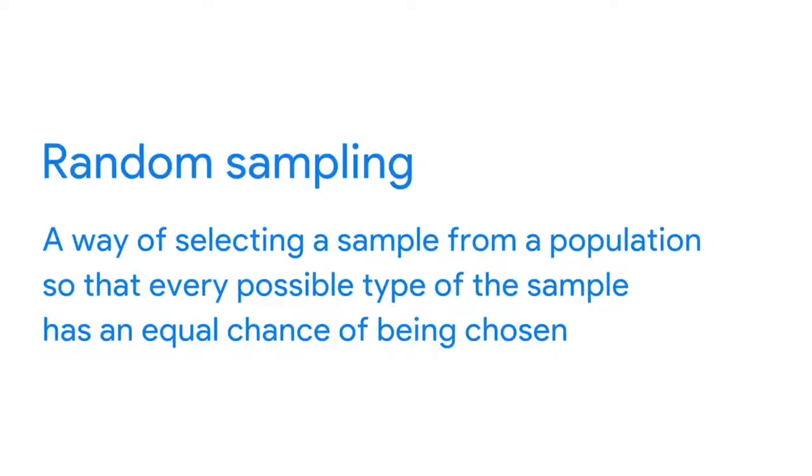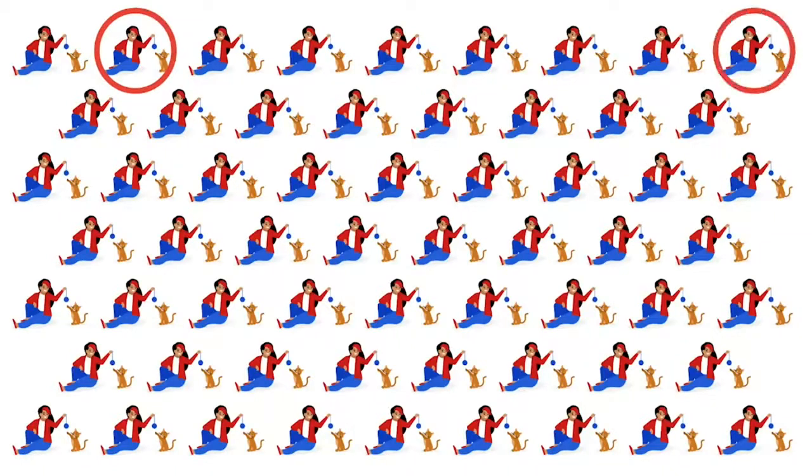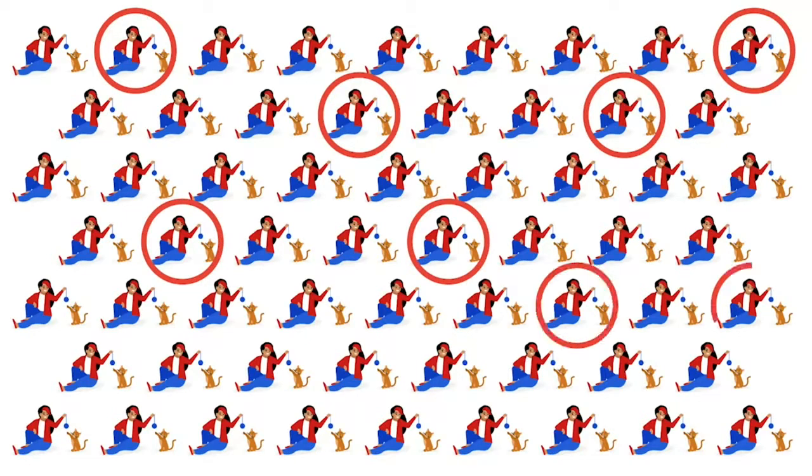For example, if the survey used to collect data from cat owners only included people with smartphones, then cat owners without smartphones wouldn't be represented. Using random sampling can help address issues with sampling bias. Random sampling is a way of selecting a sample so that every possible type of the sample has an equal chance of being chosen. As a data analyst, you'll find that creating sample sizes usually takes place before you even get to the data, but it's still good to know that the data you're analyzing is representative of the population.